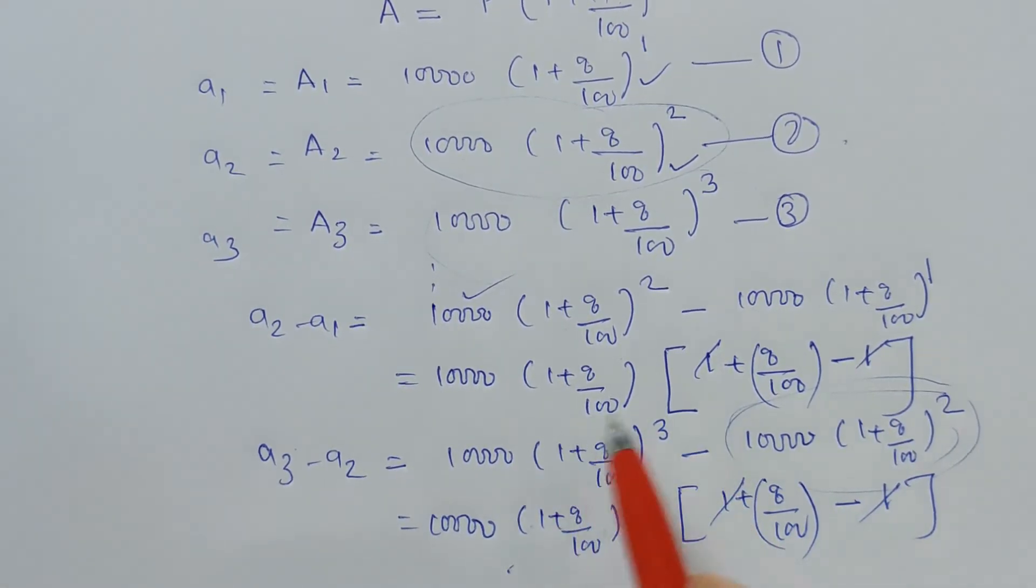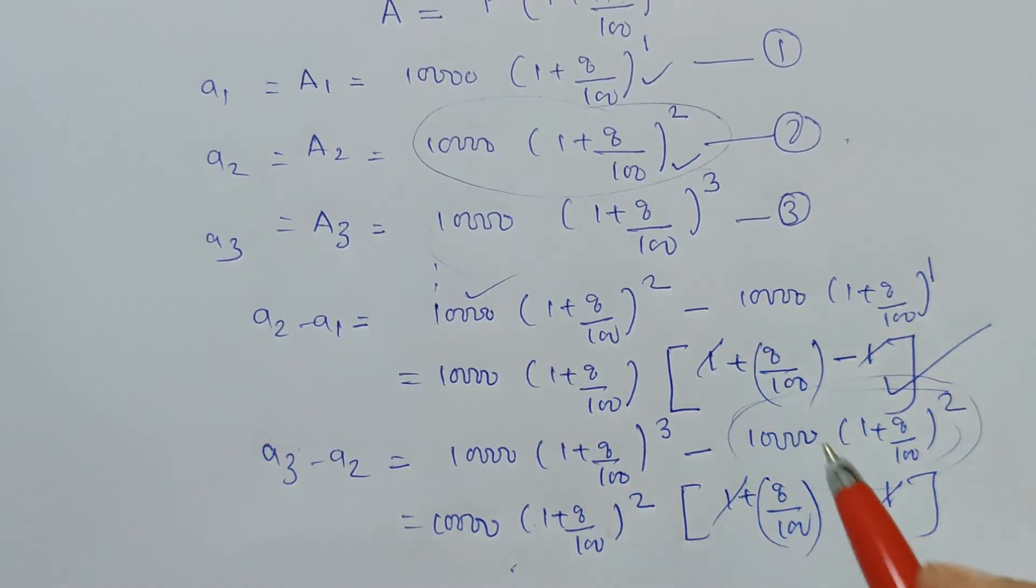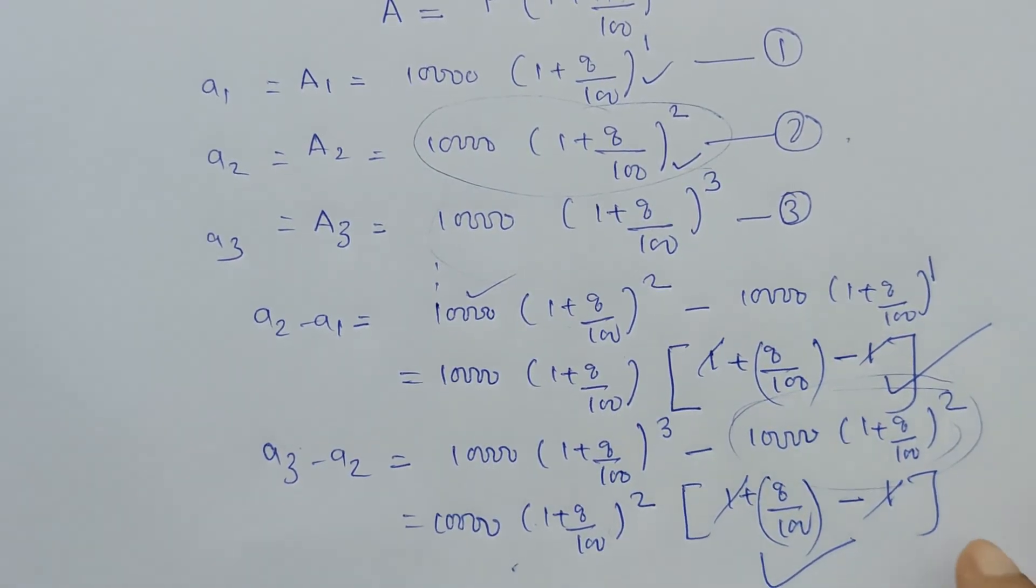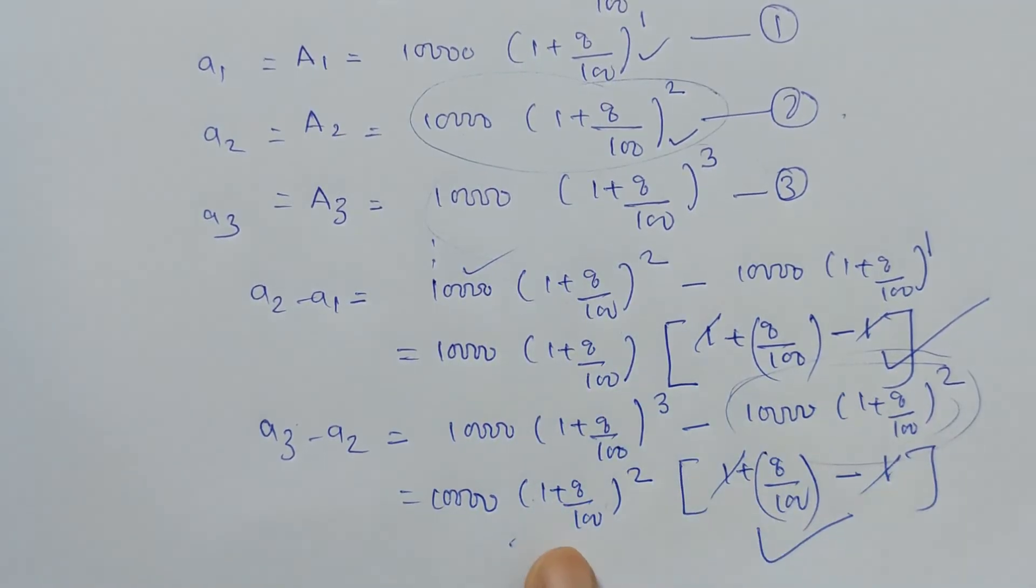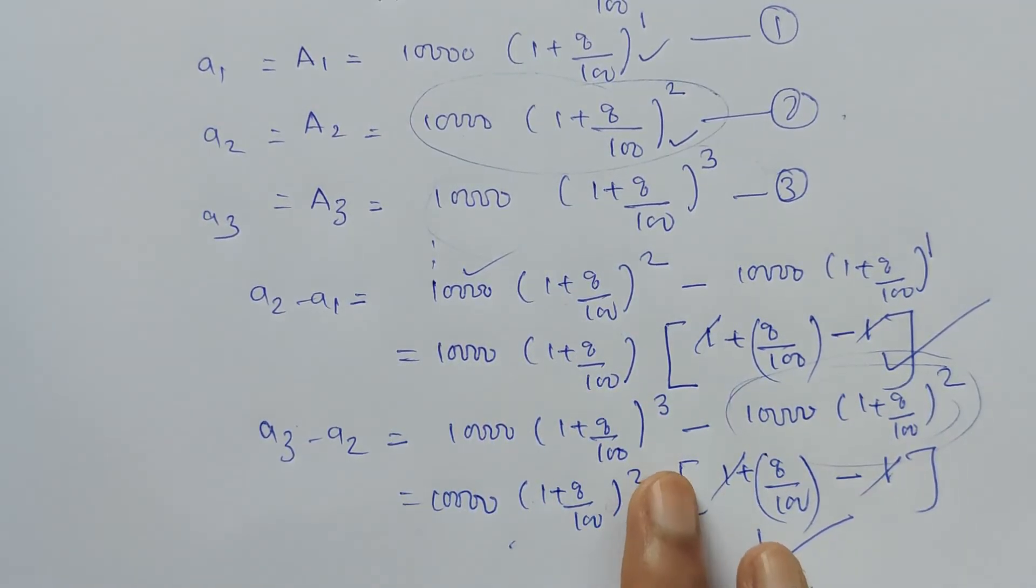So when you check this answer and this answer, a₂ - a₁ is having only (1 + 8/100), but here we have (1 + 8/100)^2.